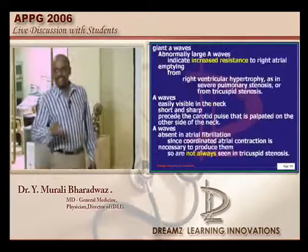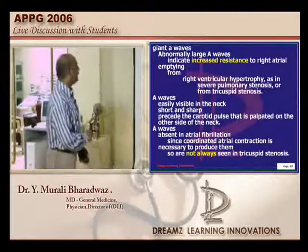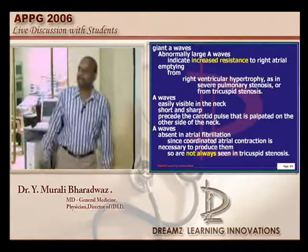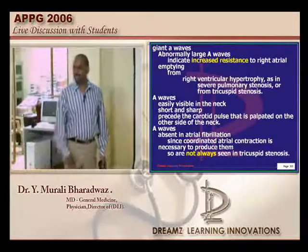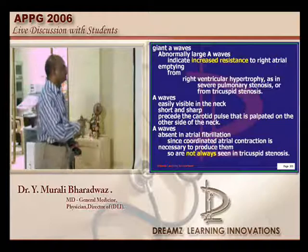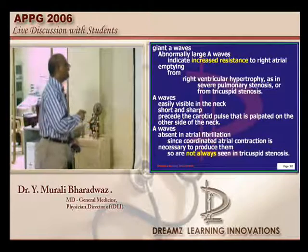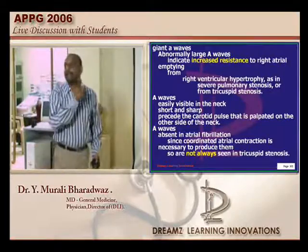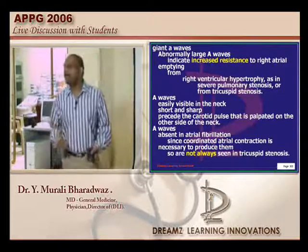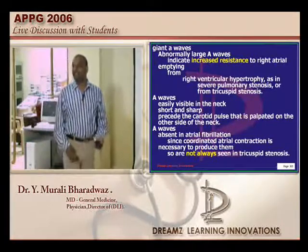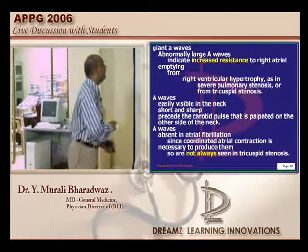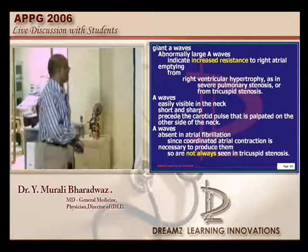Now let us talk about the giant A waves asked in this exam. Large A waves mean increased resistance for filling of the right atrium. Situations that make right atrial filling difficult: pulmonary stenosis, tricuspid stenosis, right ventricular hypertrophy — all will make A waves very large and visible in the neck. In atrial fibrillation, when the atrium is not contracting at all, A waves will be totally absent. Dominant A wave is seen in pulmonary stenosis, pulmonary hypertension, and tricuspid stenosis — not regurgitation.